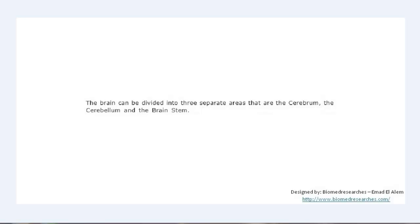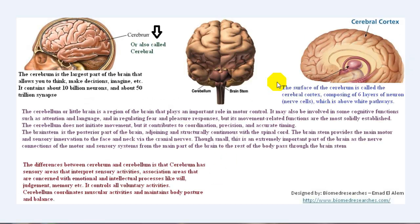The brain can be divided into three separate areas: the cerebrum, also called cerebral, the cerebellum, and the brainstem. The cerebrum is the largest part of the brain, which allows us to think, make decisions, and imagine. It contains about 10 billion neurons and about 50 trillion synapses.